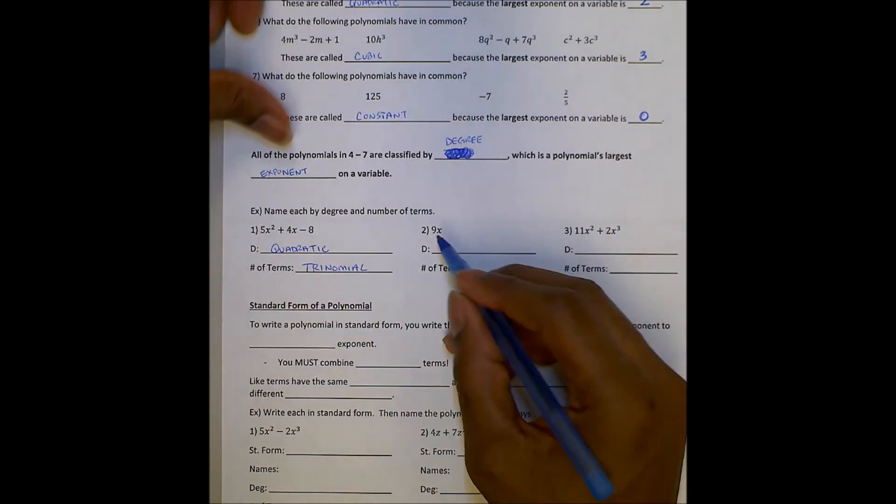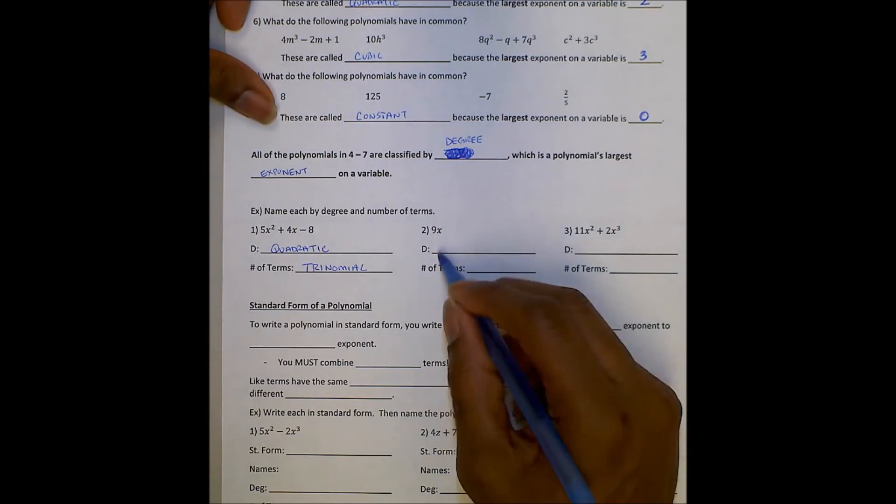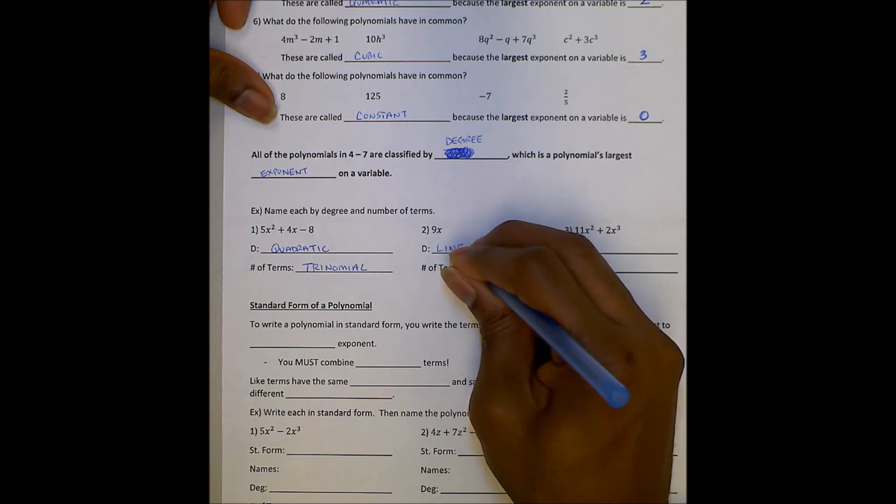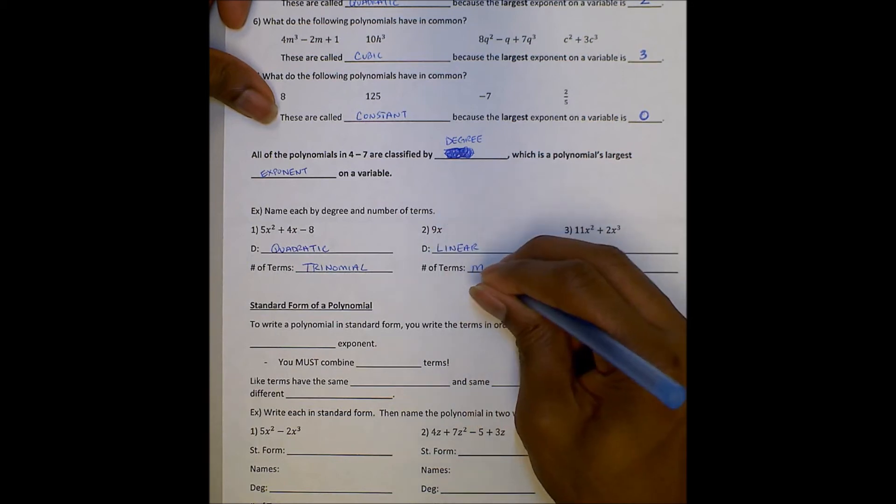Second example, we have 9x. The degree, one variable, has 1, so linear. Number of terms, there's only one term. 9x is the term. So linear monomial.